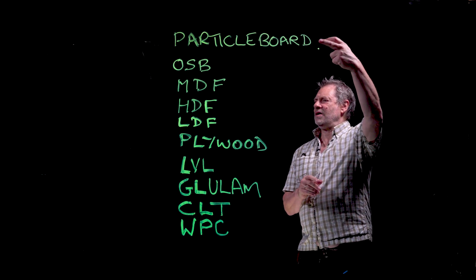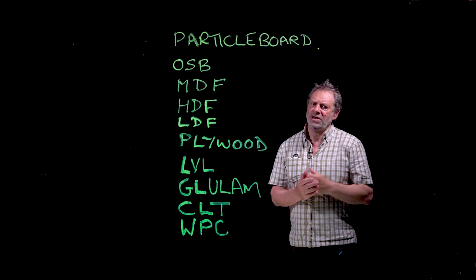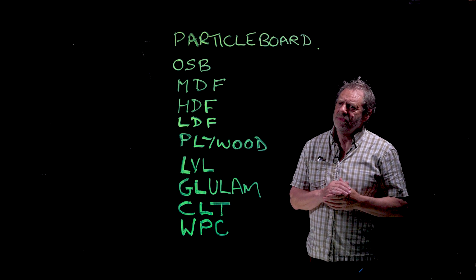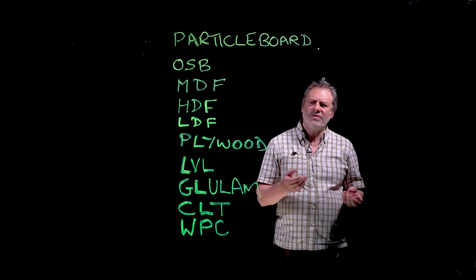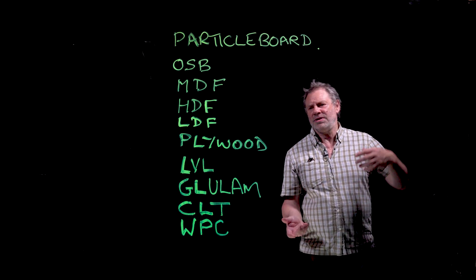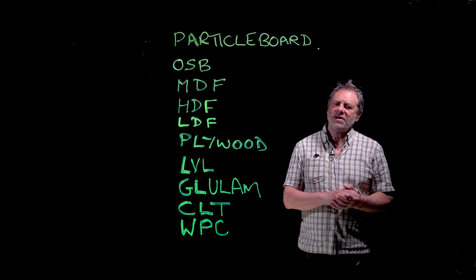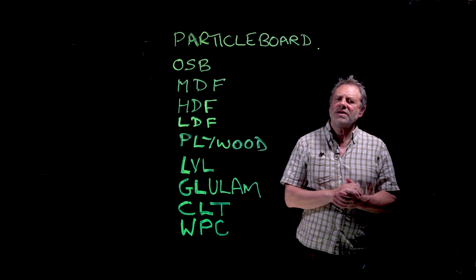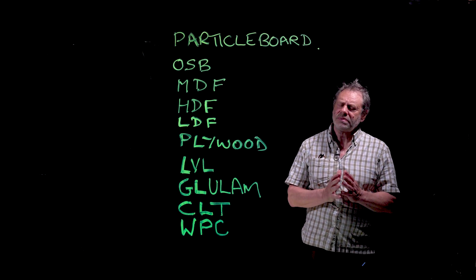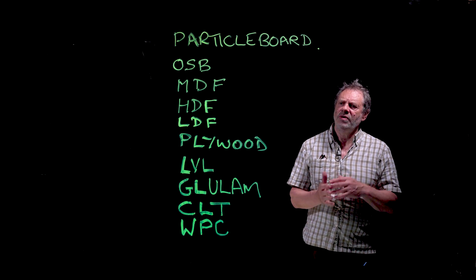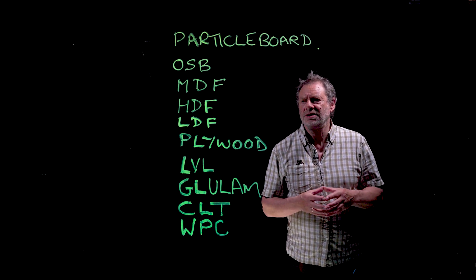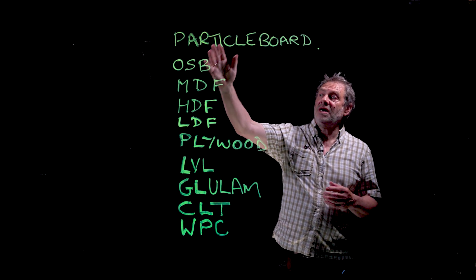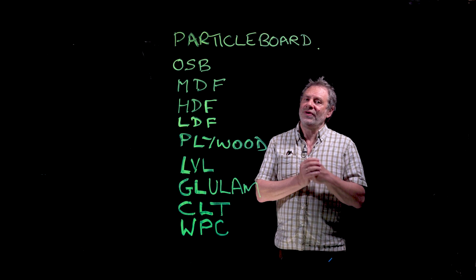Particle board tends to be found in kitchen units and shelving - fairly low end - but you can use all sorts of offcuts, chips, thinnings, and recycled wood. For that reason it's a very popular product, very often used for furniture. It often uses a urea formaldehyde based resin system, so it's not really very moisture resistant.